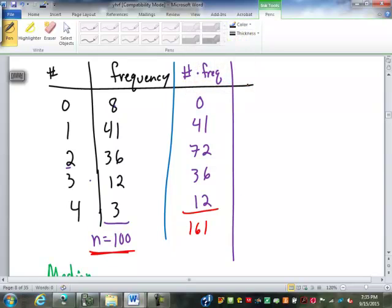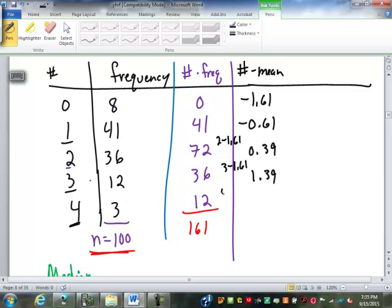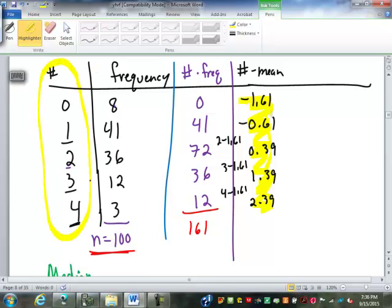So I'm going back up to my table up here. What's going to go in here is the number minus the mean. So 0 minus 1.61 is a negative 1.61. 1 minus 1.61 is a negative 0.61. 2 minus 1.61 is 0.39. 3 minus 1.61 is 1.39. And 4 minus 1.61 is 2.39. Any questions as to where those numbers came from? This number minus our mean of 1.61.